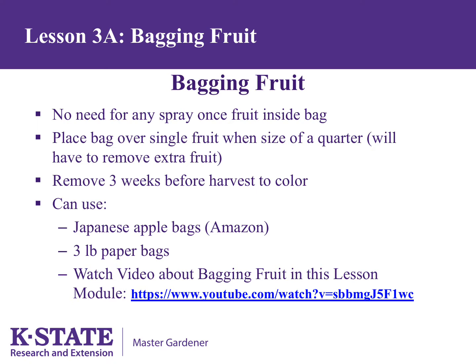There is no need to spray the fruit for either insects or disease once the bag is attached. Leaf diseases may still need to be controlled, as only the fruit is covered. The bag is placed over the fruit when it is about the size of a quarter. Remember that apples bear fruit in groups of five, so four of those fruit would need to be removed. Apples do not color unless sunlight hits the fruit — for example, Red Delicious apples will not turn red by harvest if they remain covered. Therefore, the bag should be removed about three weeks before harvest. There is an excellent video on how to bag fruit at the URL listed.